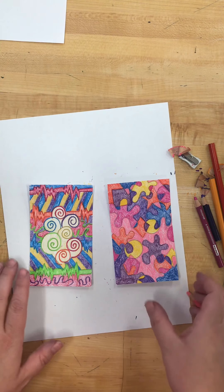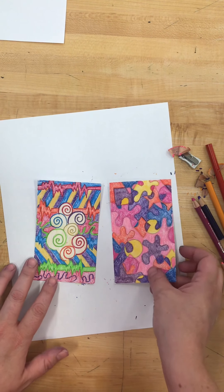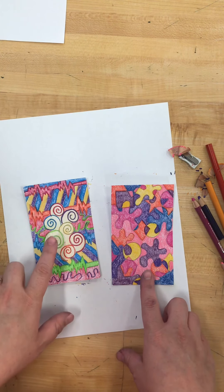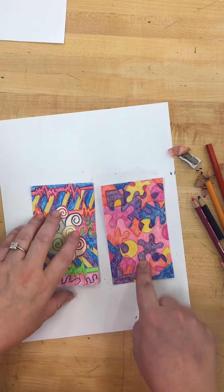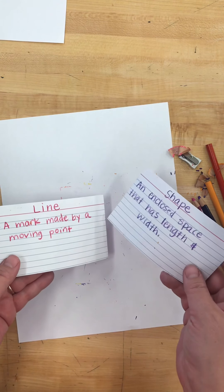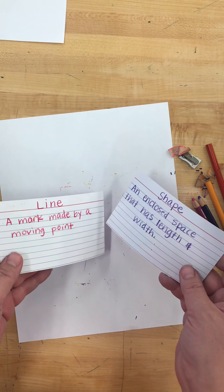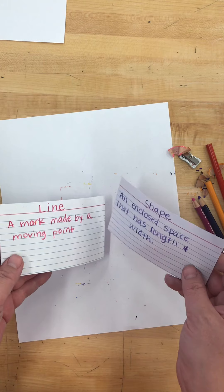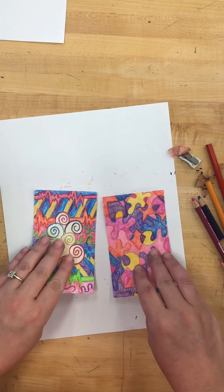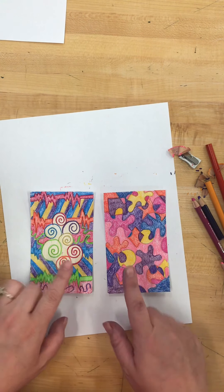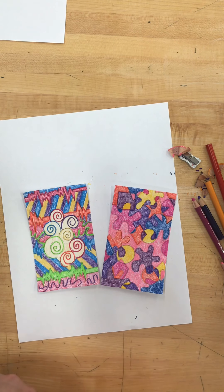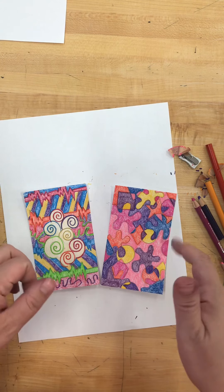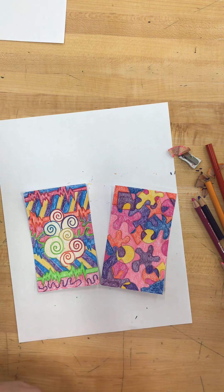So your goal for today, Monday, August 31st, is to have a line trading card done and a shape trading card. On the opposite side, I do want you to put the name of the vocab element and its definition. So August 31st, line and shape trading card is due. Take a picture of it and upload it to Assignments on Canvas.